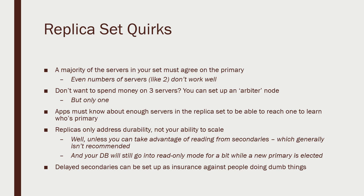Your applications need to know about at least a few servers in your MongoDB cluster — the current primary and a few secondaries — so they can ask who the primary is. That means if you're changing your server configuration, adding or removing secondaries, you need to push that information all the way up to your applications, which can be tedious. However, this was addressed in MongoDB 3.6 with a new feature called DNS seed list connection format, which allows you to change servers in rotation without having to reconfigure your clients.